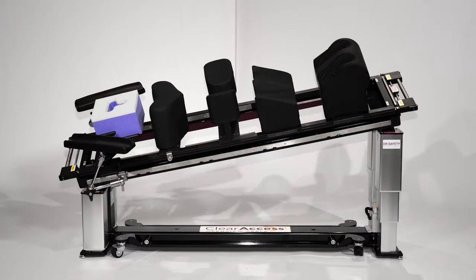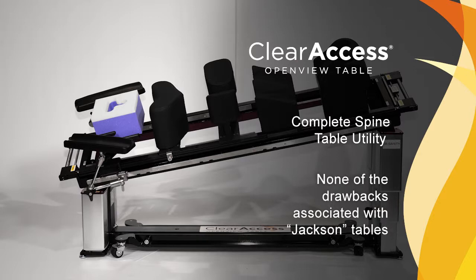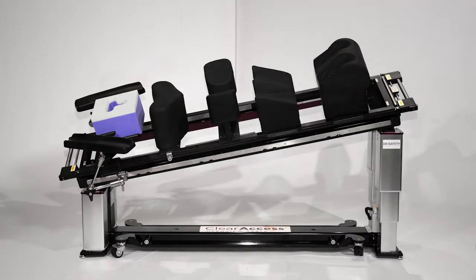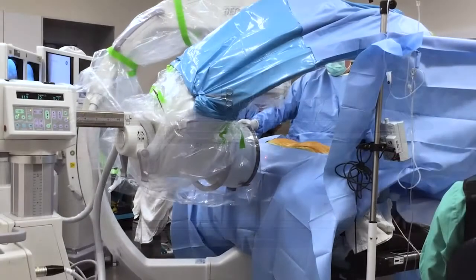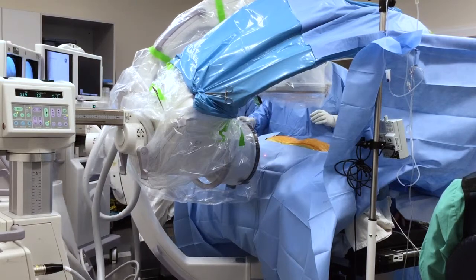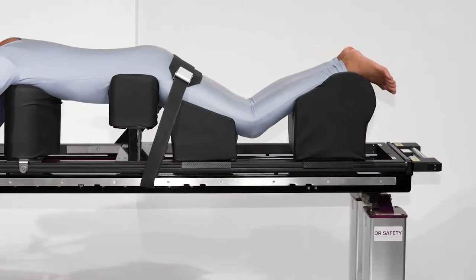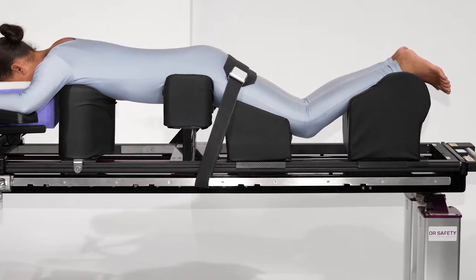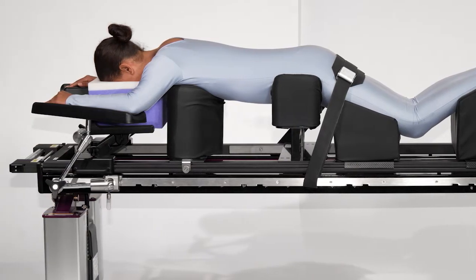The ClearAccess spine surgery table by OR Safety was developed to maintain all of the utility of competitive spine tables that are generically referred to as Jackson tables, while removing all of the notable drawbacks of those types of systems. The table maintains head-to-toe C-arm access for lateral, anterior, and posterior spine procedures and can support the simultaneous use of two C-arms. While maintaining such unrestricted C-arm access and providing target site radiolucency, the ClearAccess table has a safe working load of 600 pounds and has a noticeably more stable operating surface, particularly for heavier patients.